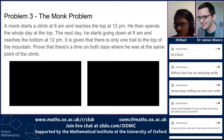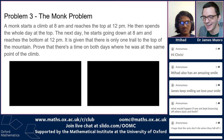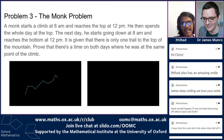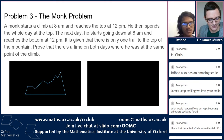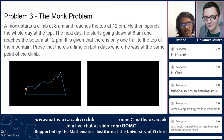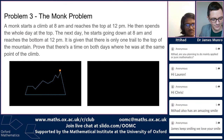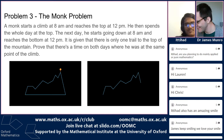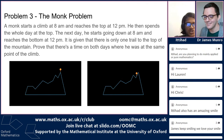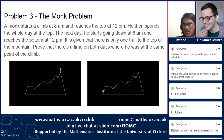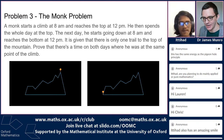The monk's problem. A monk is going to the top of a mountain. He starts his climb at 8 AM and reaches the top at 12 PM. He spends the whole day and night at the top. The next day, he starts going down at 8 AM and reaches the bottom at 12 PM. There is a single trail to the top of the mountain. We have to prove that there is a time on both days when he was at the same point of the climb.